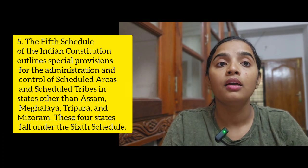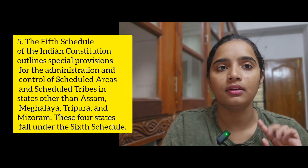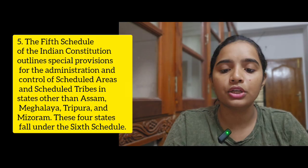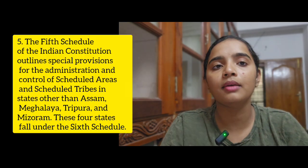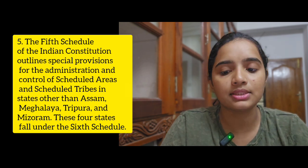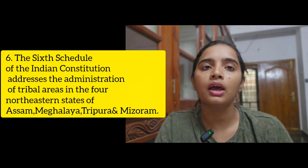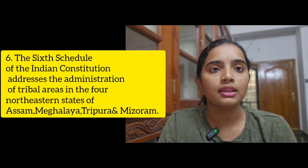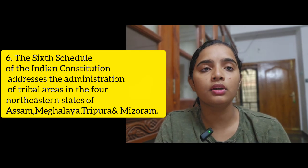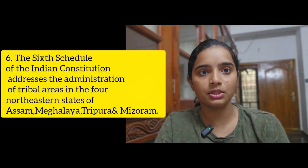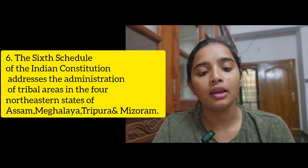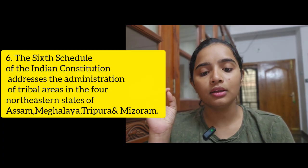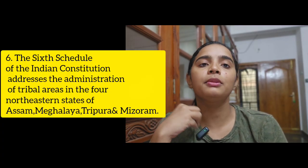The fifth schedule is S — Scheduled Areas and Scheduled Tribes. Administration and Control of Scheduled Areas and Scheduled Tribes. The sixth schedule relates to Provisions Relating to the Administration of Tribal Areas in the States of Assam, Meghalaya, Tripura and Mizoram. S is the Area of the North East — the constitution of those states.